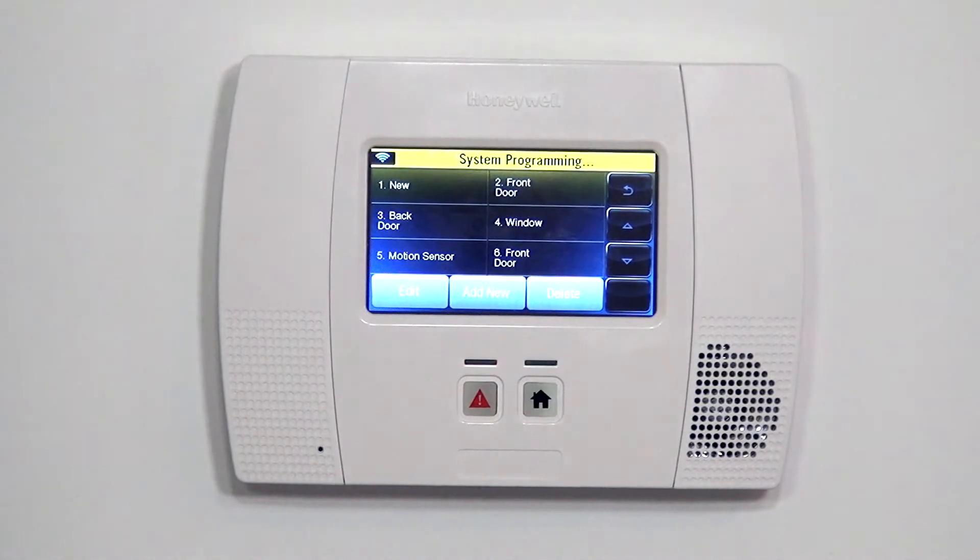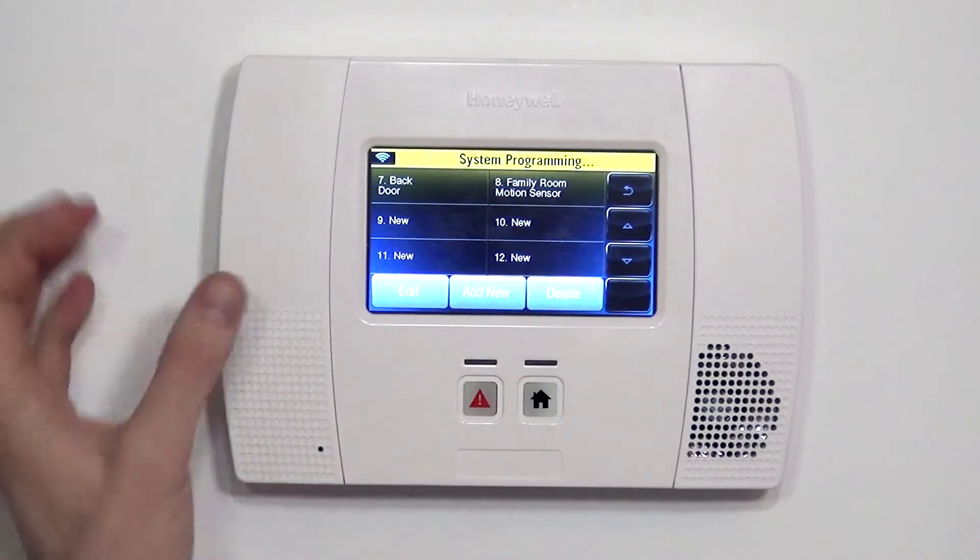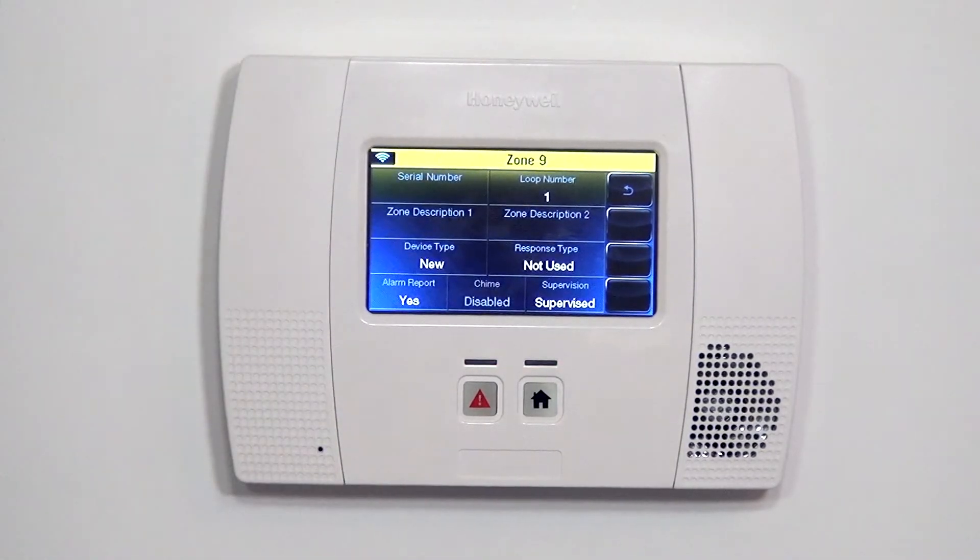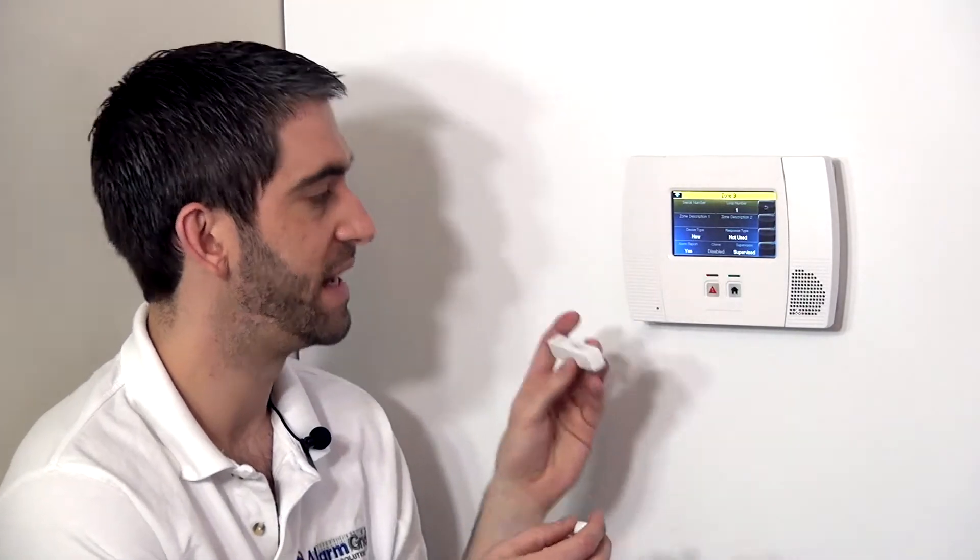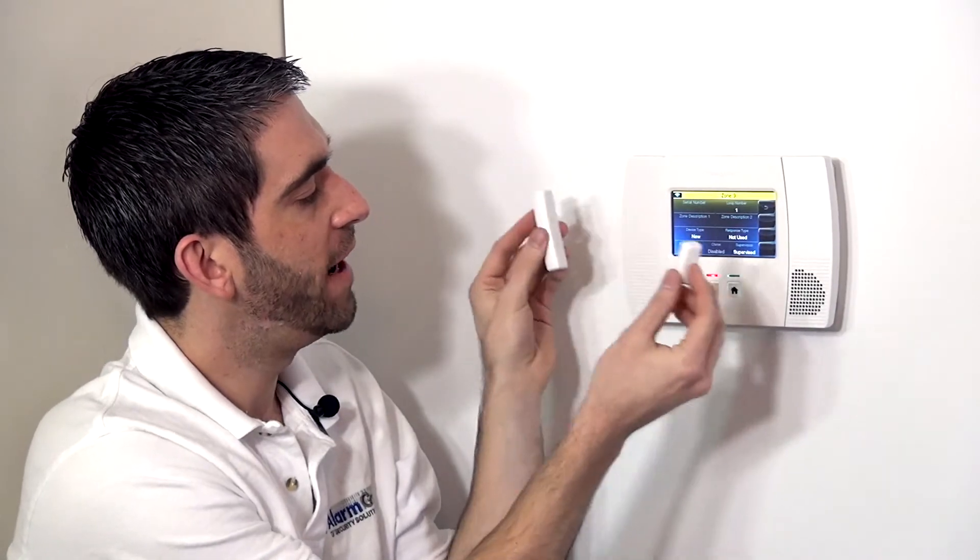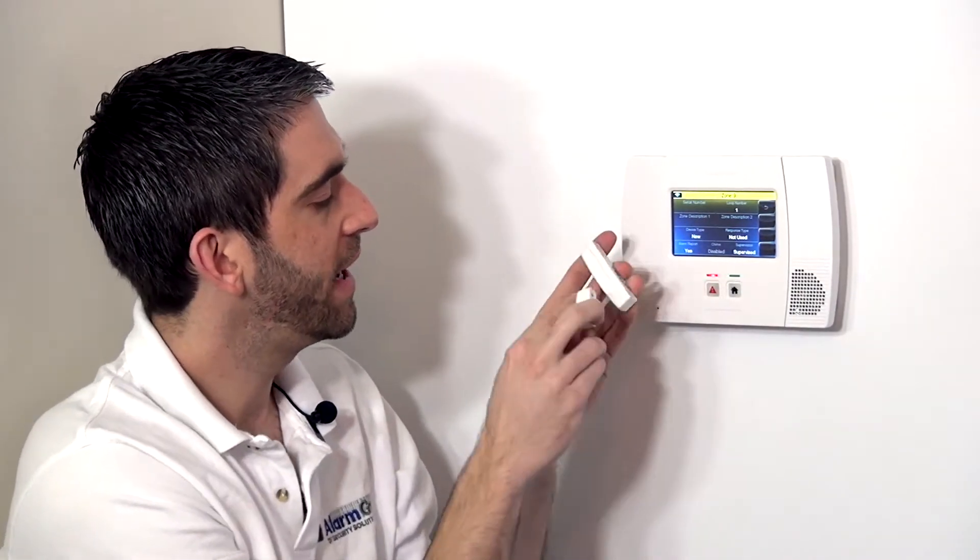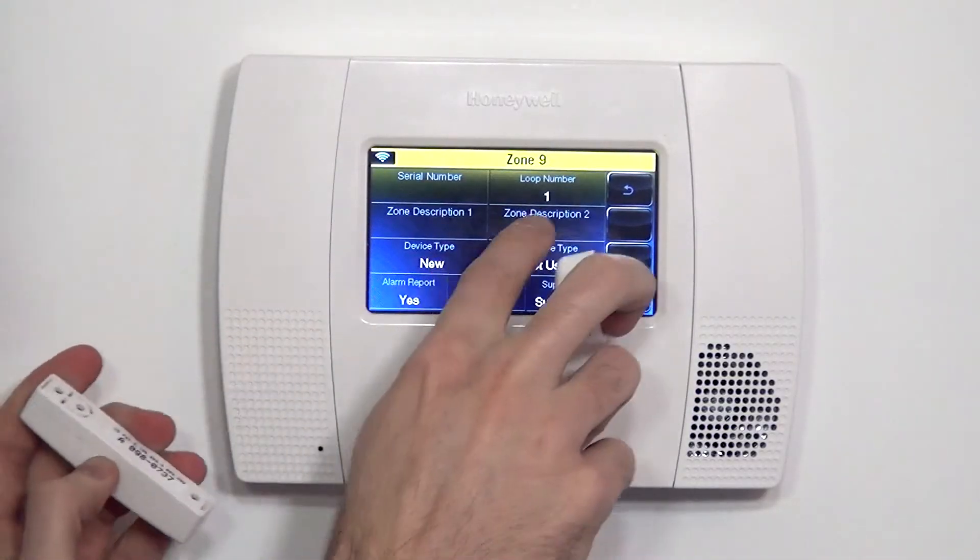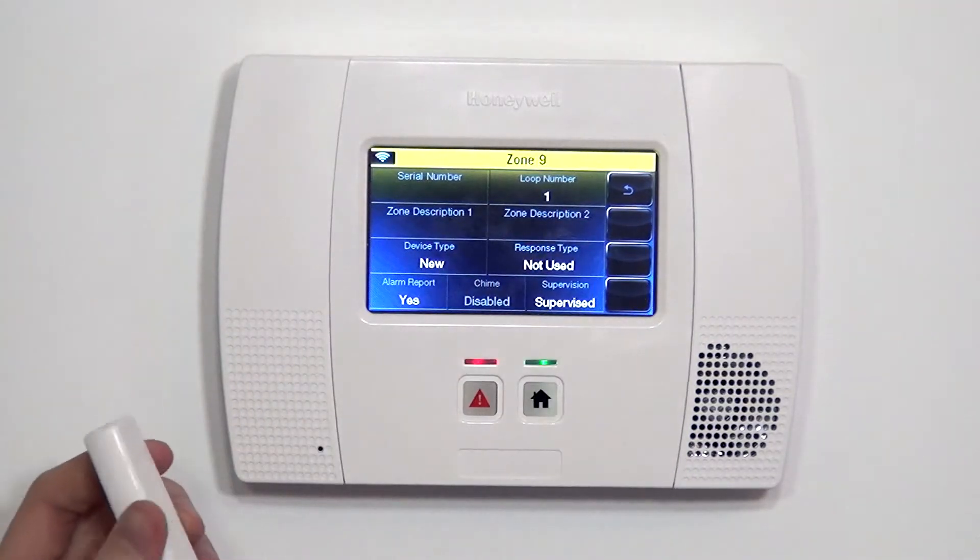If we go to Zones, that's where we use the screen to select the next available zone. We go to Zone 9 and click Edit, and now we can input this device to the system. To learn in any Honeywell sensor to the system, you need the serial number, or you can auto-enroll the device. We'd like to verify the sensor works and make sure that the proper serial number and the proper loop number get learned in.